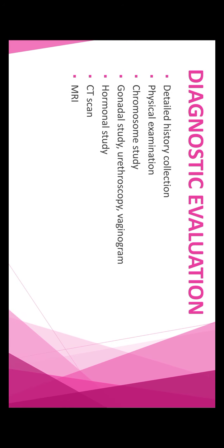Diagnostic evaluation includes: first, a detailed history collection — including family history of ambiguous genitalia, history of abortion or early neonatal death, and intake of hormonal medication during pregnancy. Then physical examination, chromosomal study, gonadal study, urethroscopy — which is examination of the upper urinary tract — vaginogram, which is a method done to visualize structures of the vagina, hormonal study, CT scan, and MRI.